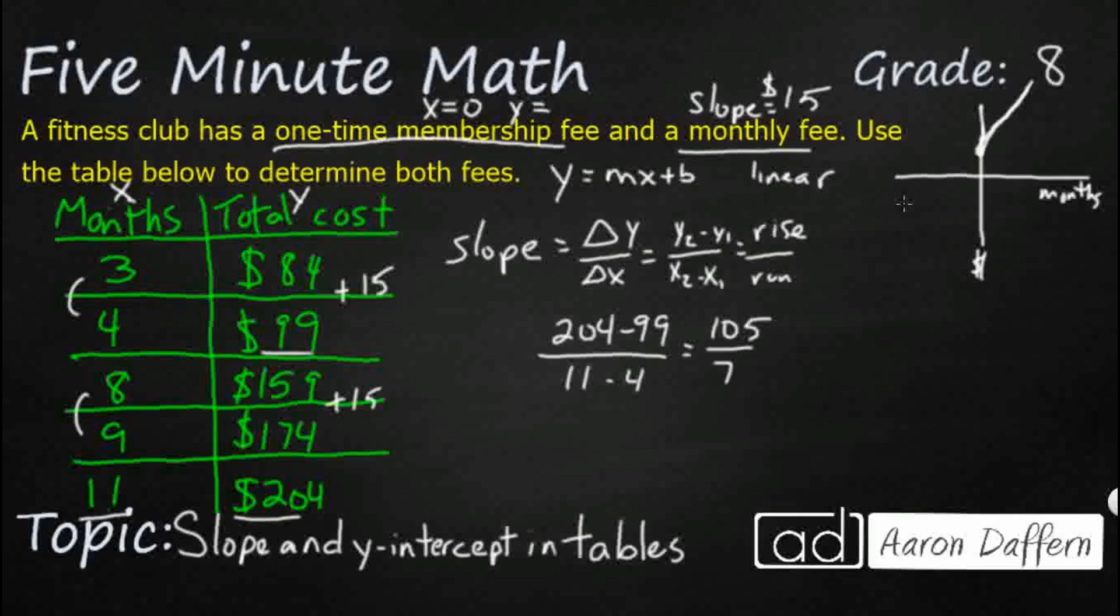So we've got 105 over 7. And hopefully 7 times 15 makes 105, right? Because that's what we're looking for. So there we go, that's 105. So that does equal 15. So you could do it the long way, the slope as change of y over change of x, or you can just find two consecutive months if you have them. Sometimes they won't give them to you. So that's our slope.